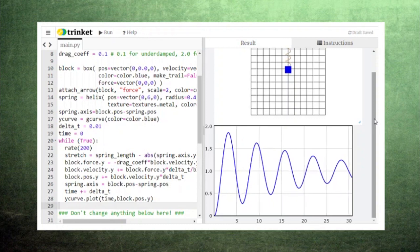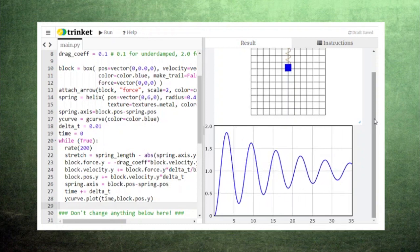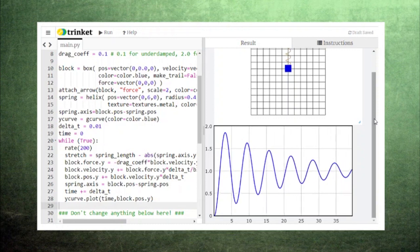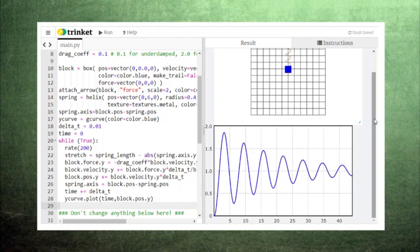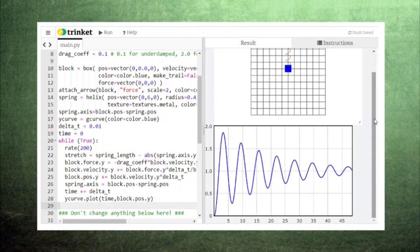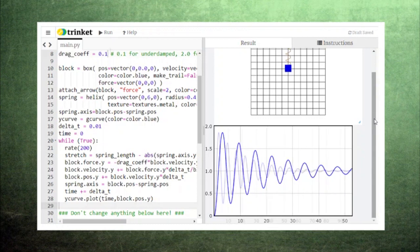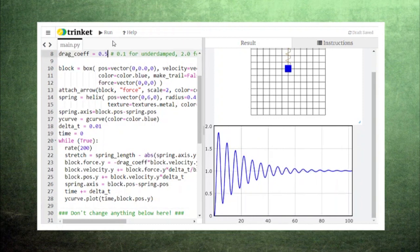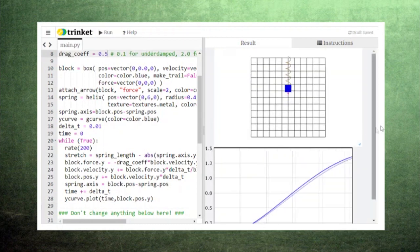We do still have the oscillations that we saw before, but we can see that their amplitude is decaying. In fact, you could trace out the peaks of this graph and get an exponential curve, which you'll explore more in the activities below. If we increase the drag coefficient, we can see the peaks decay faster.